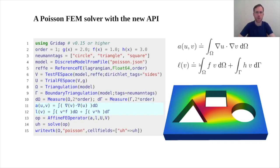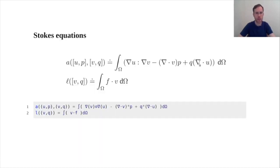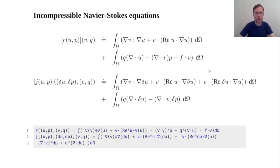It also works in much more complex scenarios. For instance, for multi-field PDEs like the Stokes equation, the user again can specify the weak form in a very compact way. And even in multi-field non-linear PDEs like the incompressible Navier-Stokes equation, the user can specify the weak residual and the corresponding Jacobian in a very compact notation.